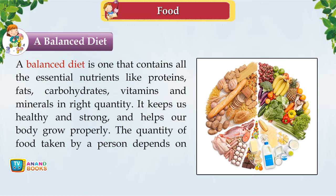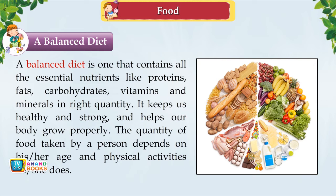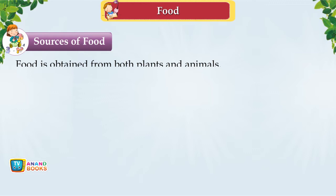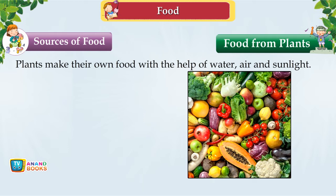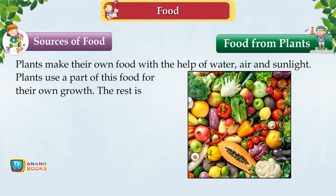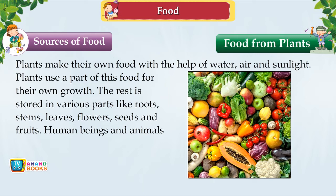Sources of Food. Food is obtained from both plants and animals. Plants make their own food with the help of water, air and sunlight. They use part of this food for their own growth and store the rest in various parts like roots, stems, leaves, flowers, seeds and fruits. Human beings and animals eat many of these parts. Plant food may be taken cooked, but some parts can be taken raw.